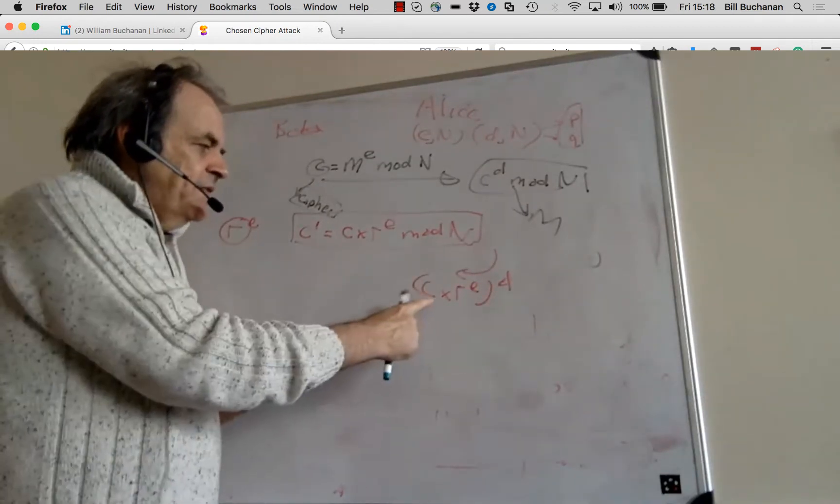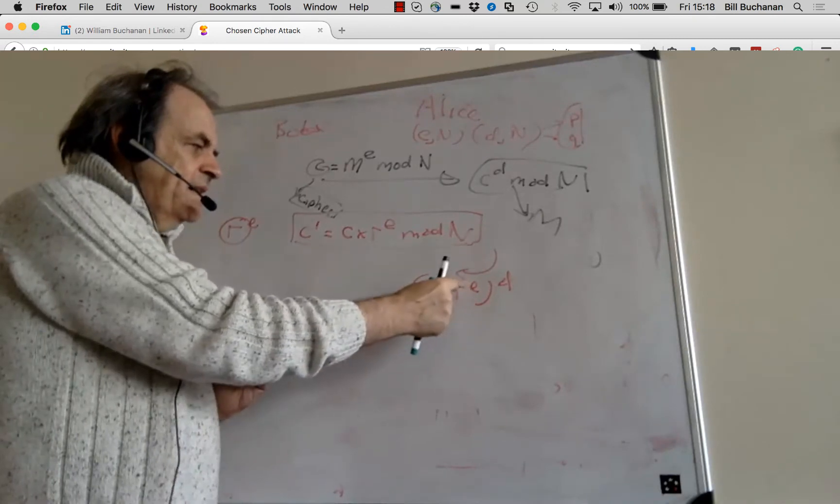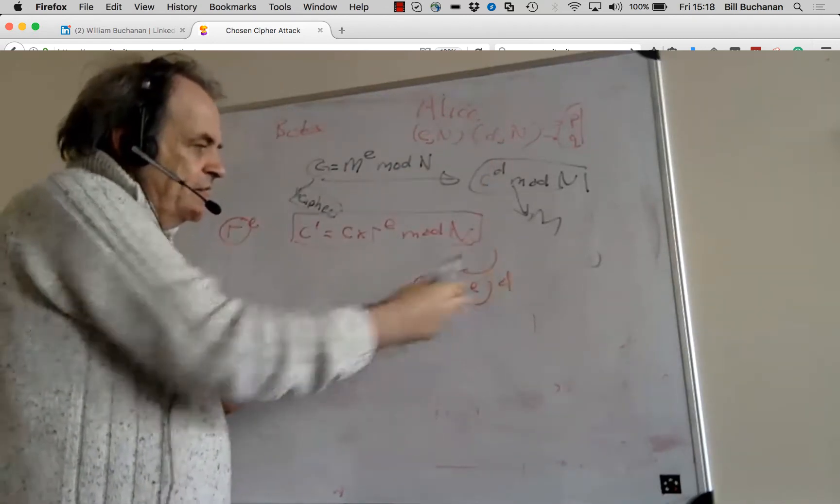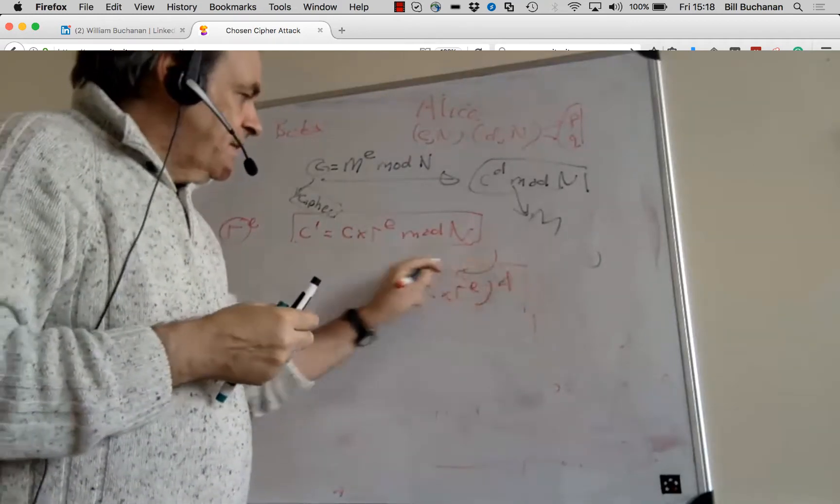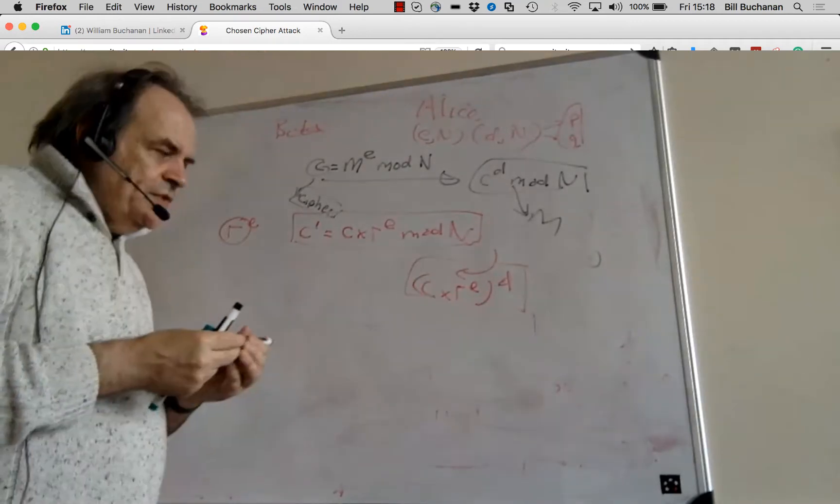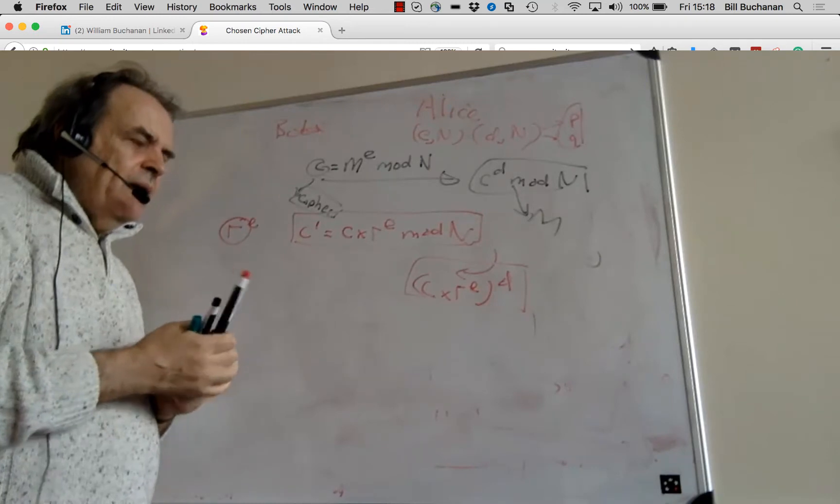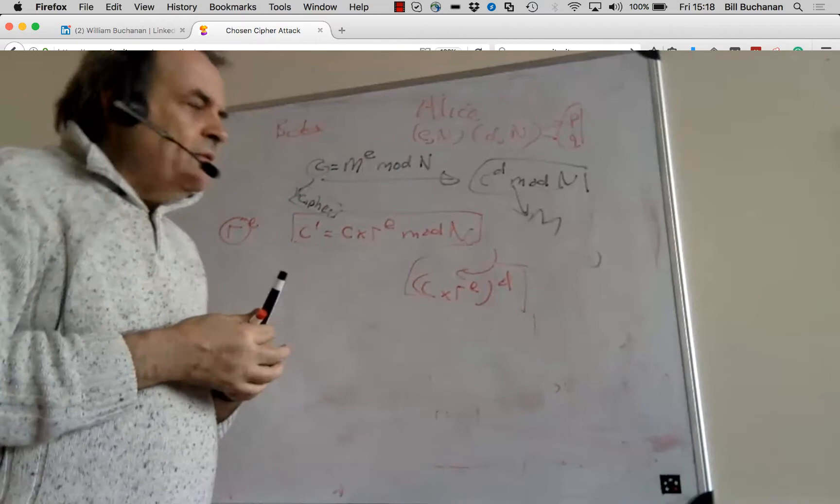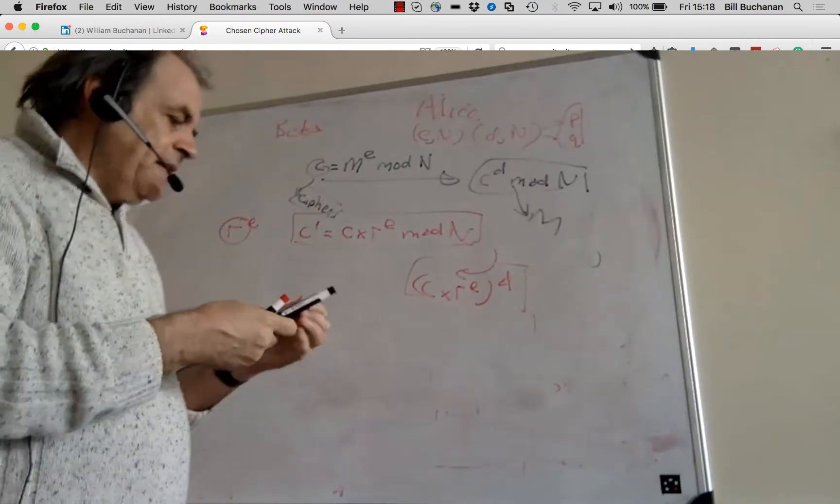She's taken cipher times R to the power of E and raises it to the D, and she ends up with this value here. So the message that she sends back saying, Bob, I don't understand what you've sent. You've sent me this.